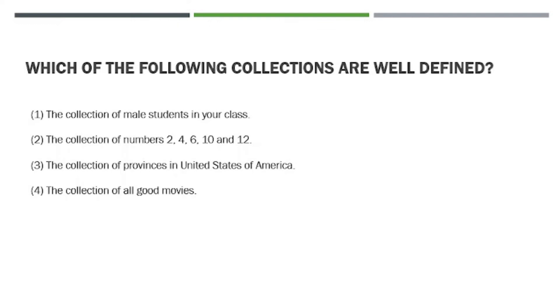It depends on people. Unlike when you say collection of male students, you know the specific data. Collection of numbers 2, 4, 6, 8, 10, 12, you really know those values. But if you say all good movies, with so many movies, which are the good movies? We don't know. We can't answer what the contents of that set are. Therefore, number 4, the collection of all good movies, is not an example of a well-defined set. When we say well-defined, you know what its contents are.